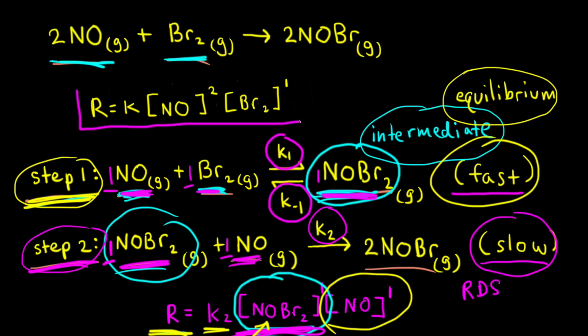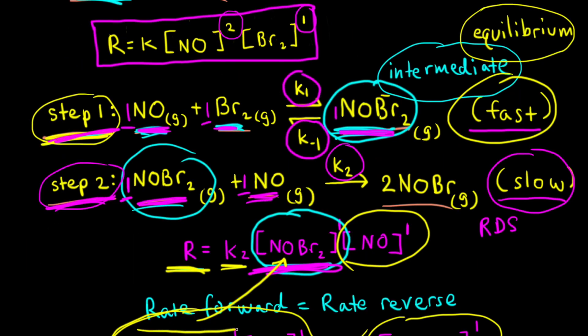The experimentally determined rate law matches the rate law found using the pre-equilibrium approximation. Looking at the overall equation, there's a two in front of NO and a one in front of Br2 — it might be tempting to just take those coefficients as exponents, but that's a coincidence for this reaction. We can only take coefficients and turn them into exponents for elementary reactions, not for overall equations. The key point is that when the rate of the forward reaction equals the rate of the reverse reaction, the concentration of intermediate NOBr2 remains constant, allowing us to use the pre-equilibrium approximation.